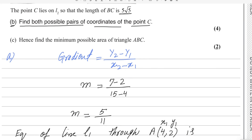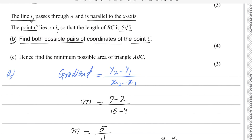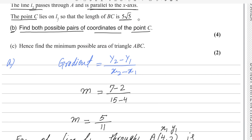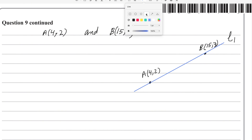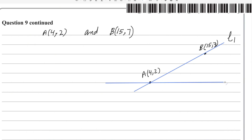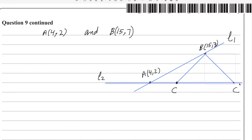L2 is a horizontal line passing through A, parallel to the x-axis. Point C lies on L2, and it could be on the left side or right side of the perpendicular from B. In both cases the length BC equals 5√5. So there are two possible positions for C, with BC = 5√5 in each case.